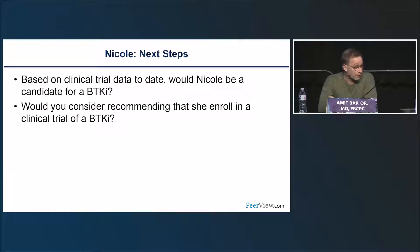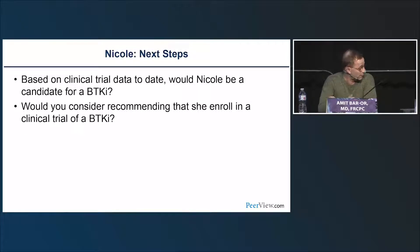Sixty percent of respondents said yes Nicole would be a candidate for BTK inhibition, 17% said no, and 23% were not sure. Diagnostically, Nicole has MS—she's early in her clinical relapsing expression of disease with sensory and motor findings, moderate lesion burden, and activity on scan, suggesting moderately active MS. This individual with early MS would be a good candidate for a treatment that appears at least moderately effective against relapsing biology and is very well tolerated and safe, if the Phase 2 profile is replicated in Phase 3.